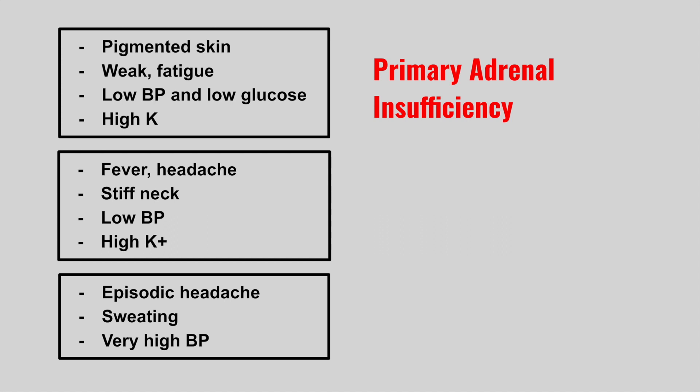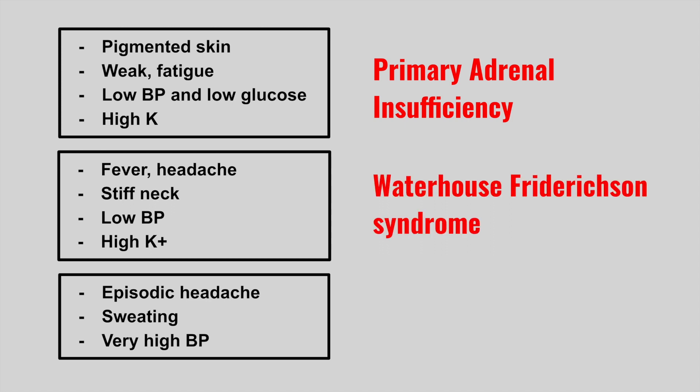The next patient has fever, headache, stiff neck, low blood pressure, and high potassium. This is Waterhouse-Friderichsen syndrome, and we get this usually due to a meningitis infection.